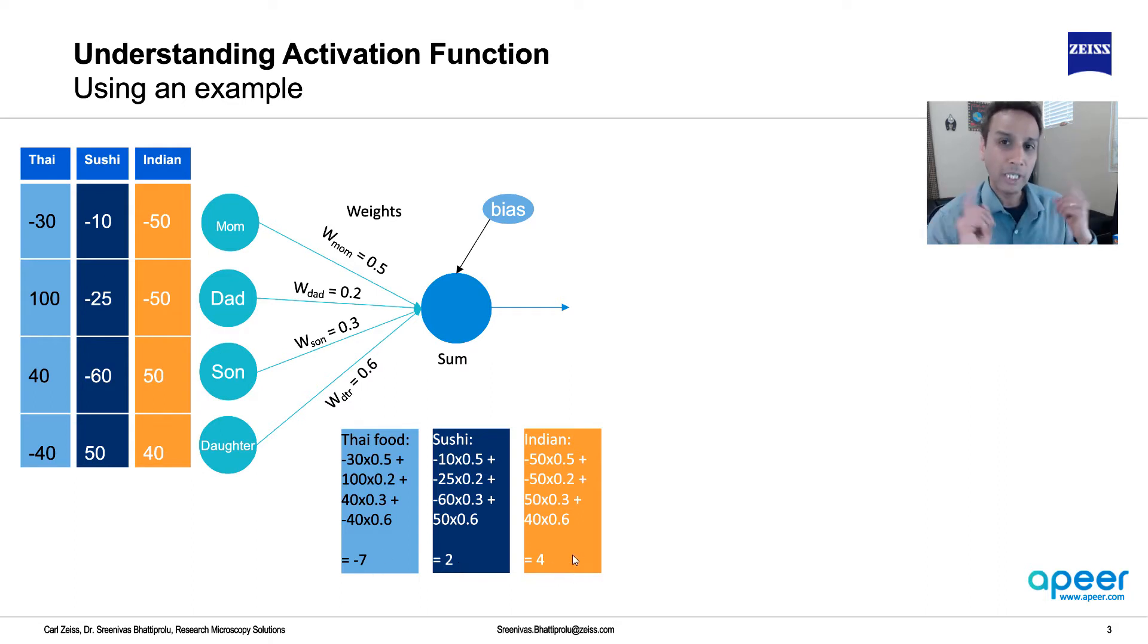So in our brains, what we just did is a linear activation function, which is mx equals to y. When you multiply your minus seven with one, it is minus seven. Two with one, it is two, and four with one, it is four. So in our mind, we are saying the highest wins, and this is the one.